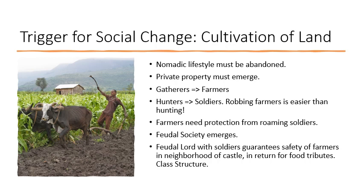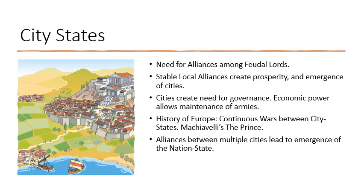This would be the basic impetus for a feudal society, where a feudal lord with a collection of soldiers protects the peasants in return for collecting tributes in the form of food. There would be a neighborhood castle with farms planted in its surrounding environment, and roaming bands of soldiers would be discouraged by the feudal lord's army. At a higher level, a collection of feudal lords living nearby would tend to prefer a peaceful relationship that gave them greater power. This led to the creation of city-states, which required a governance structure, and with economic power they could maintain an army. The history of Europe was essentially the emergence of many city-states and their continuous battles with each other for power.